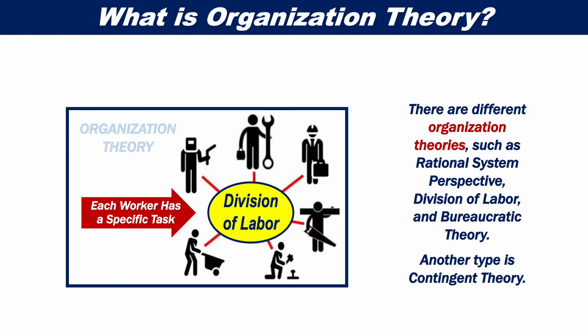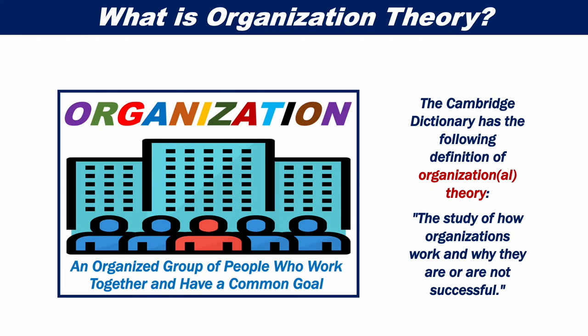There are different organization theories, such as rational system perspective, division of labor, and bureaucratic theory. Another type is contingent theory. The Cambridge Dictionary defines organization theory as: the study of how organizations work and why they are or are not successful.